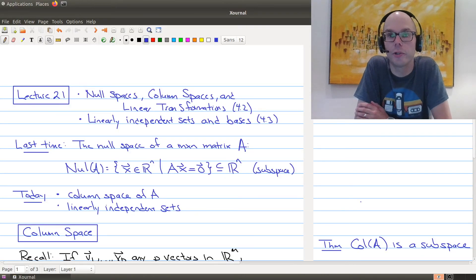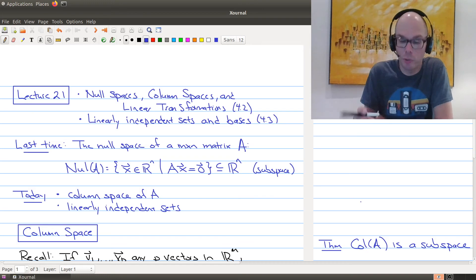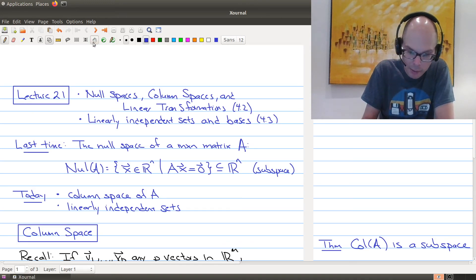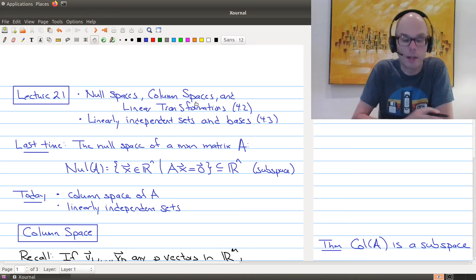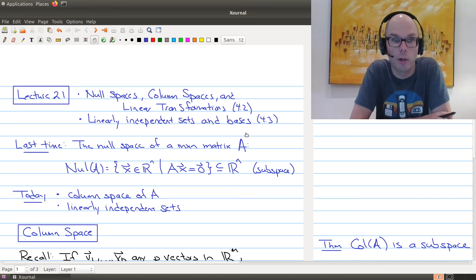Hello and welcome to Lecture 21 of Math 1B03. In today's lecture, what we're going to be doing is finishing up Section 4.2 on null spaces, column spaces and linear transformations. And then we're going to start looking at Section 4.3 of the book on linearly independent sets and bases.